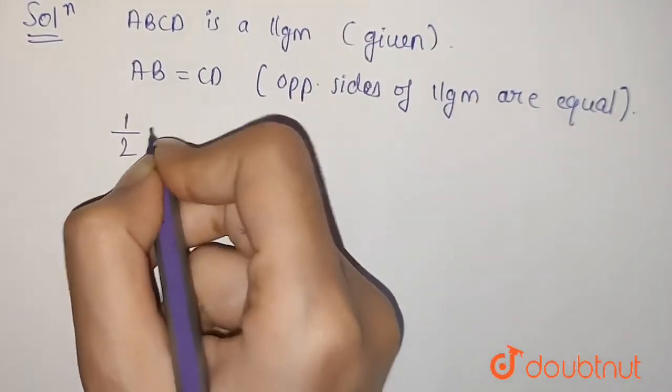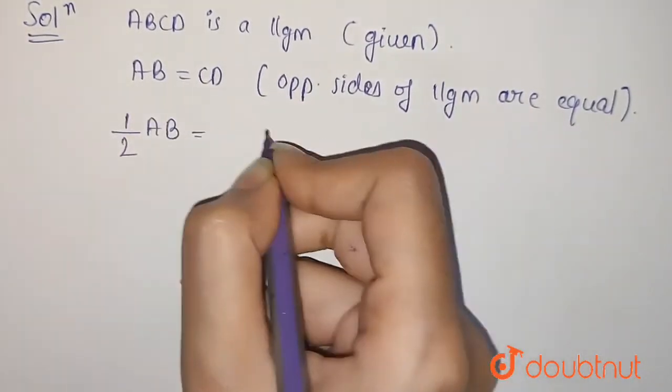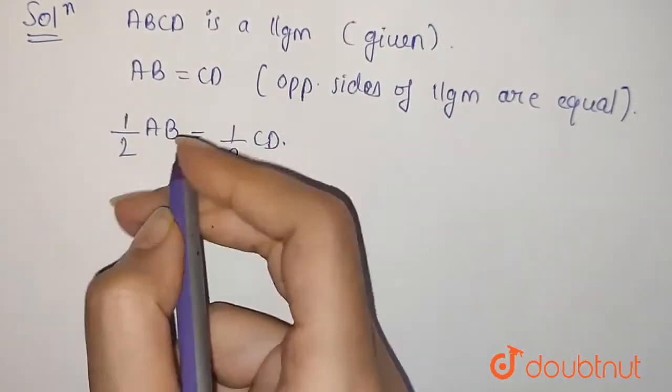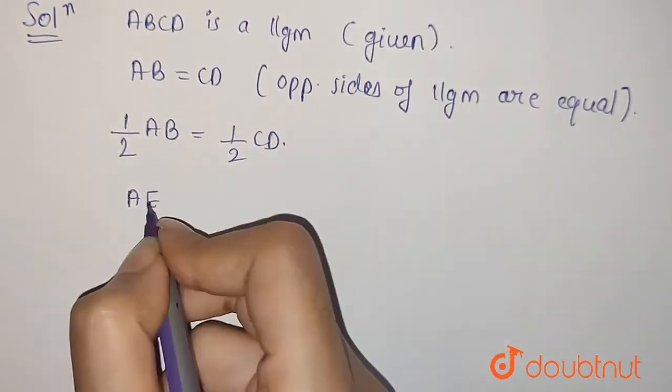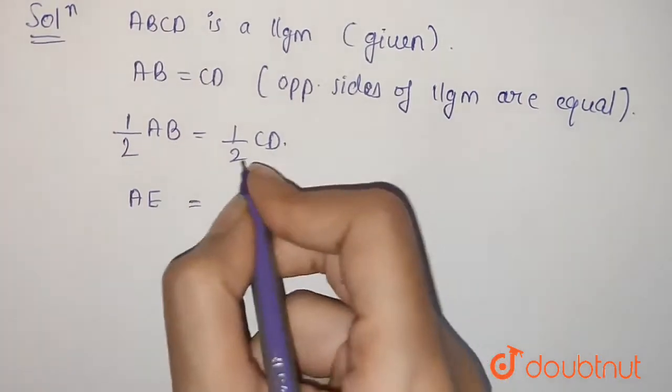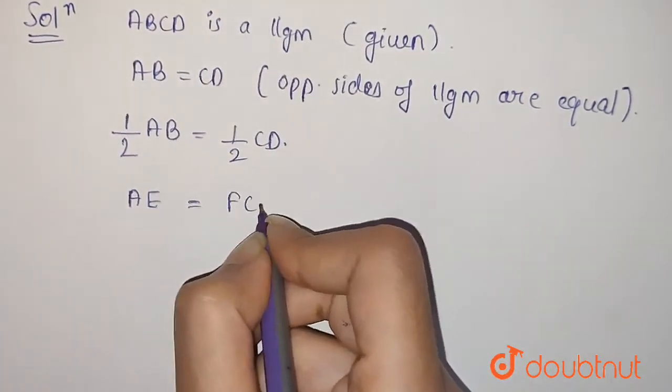Now we'll multiply half to AB as well as half to CD. We can write half AB as AE because AE is the half of AB, and half of CD as FC because FC is the half of CD.